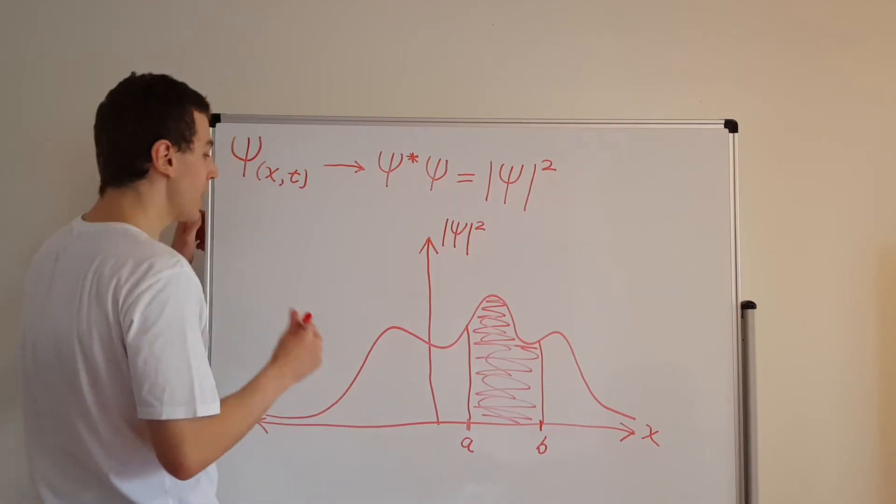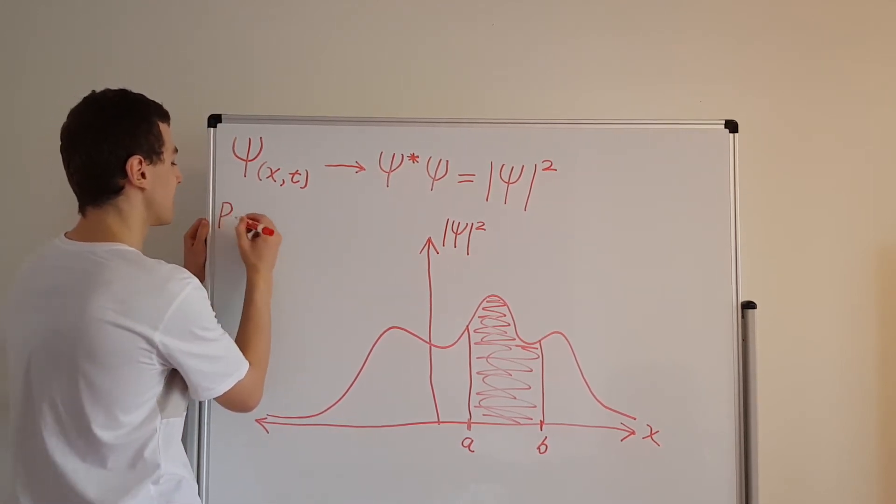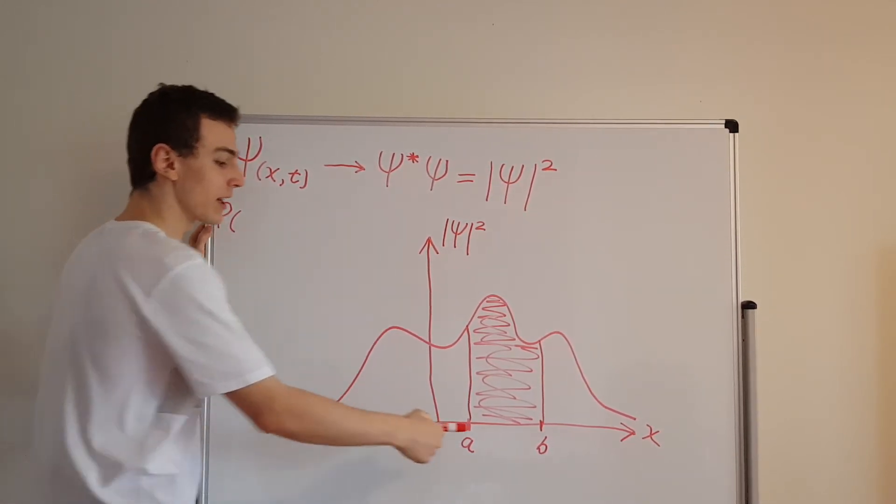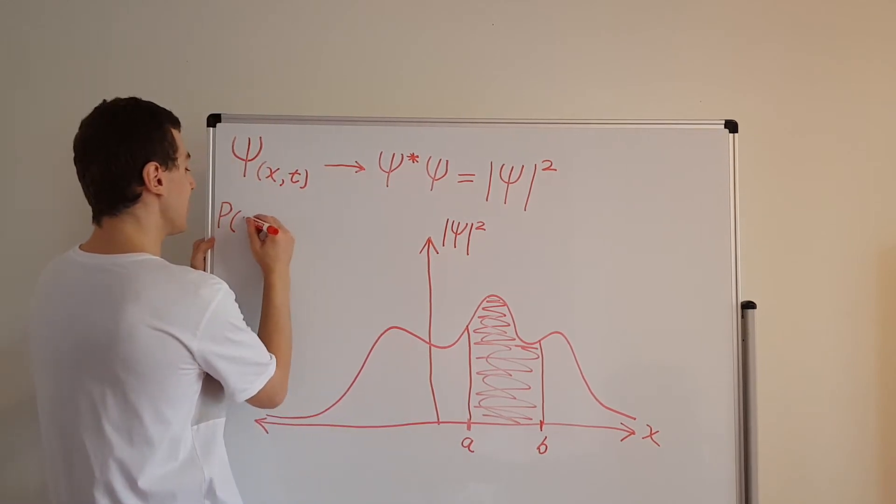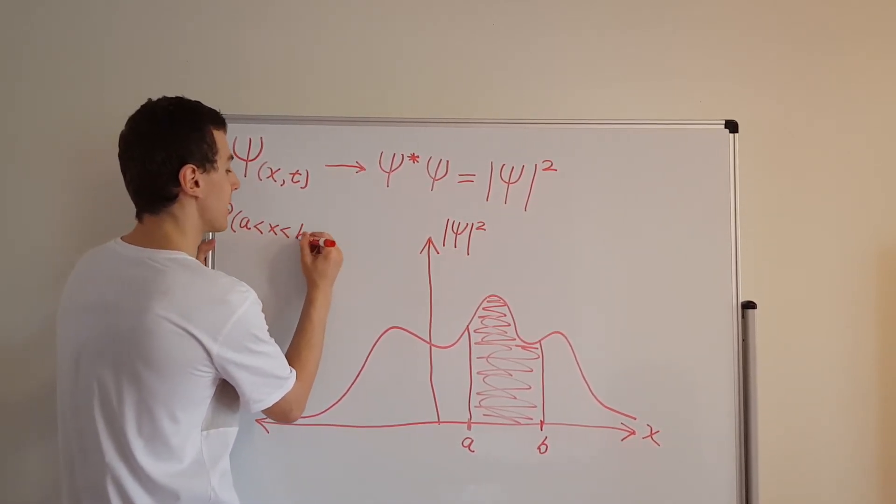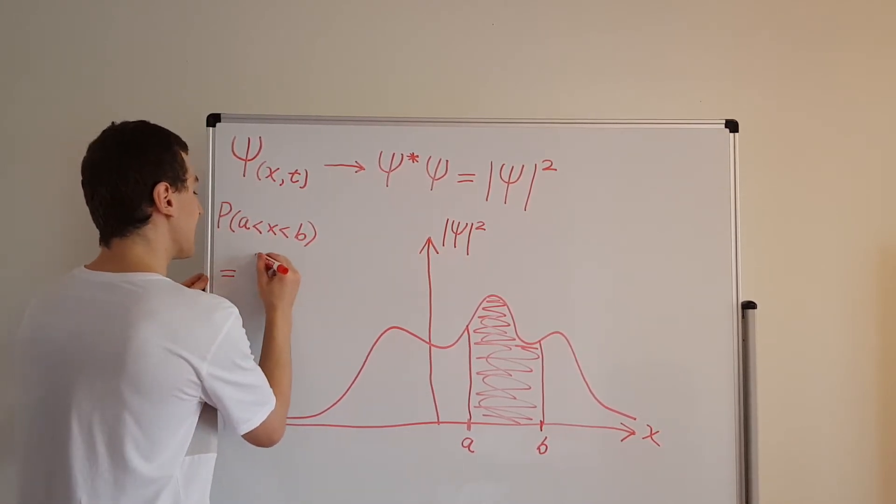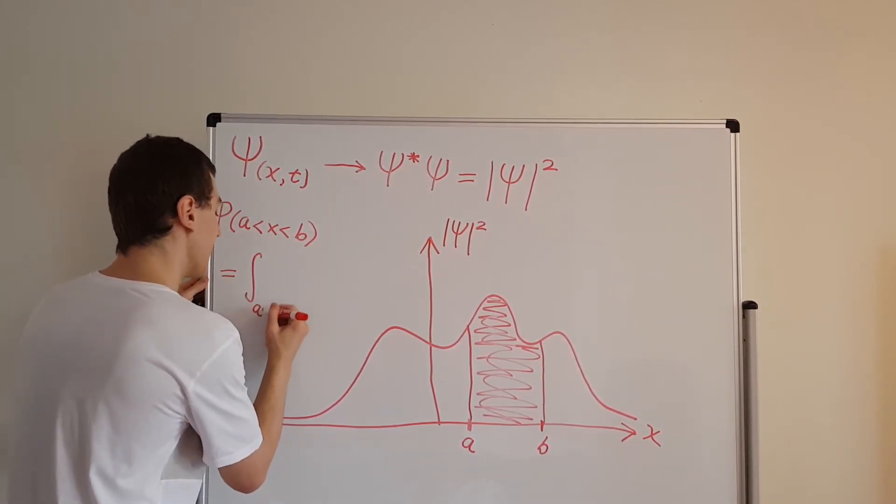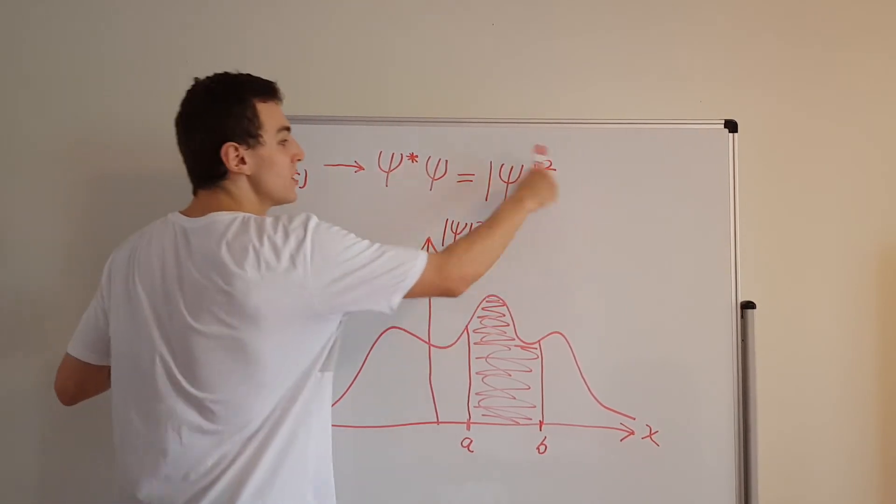So the probability of measuring, I'll write this like this, the probability of measuring an outcome of the position in between the values a and b is actually equal to the integral from a to b of this over here, which is our probability density.